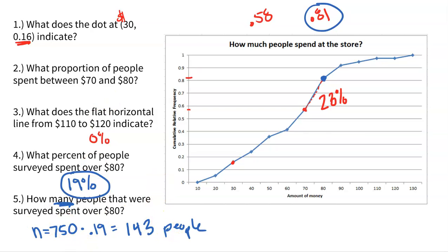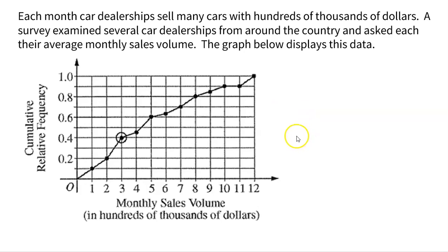Those are some great types of questions seen on previous AP exams related to these types of graphs. Let's look at one more graph. Each month, car dealerships sell many cars worth hundreds of thousands of dollars. A survey examines several car dealerships from around the country and asks each for the average monthly sales volume. Notice our x-axis is in hundreds of thousands of dollars — so 2 is $200,000, 9 is $900,000, 10 is $1,000,000, 11 is $1.1 million.